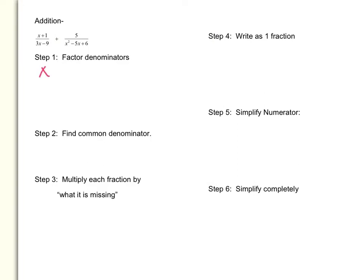In this example, there is nothing to factor out of our numerators, so they stay the same. Now, three x minus nine — I can factor a three out, so that's three times x minus three. Now let's look at the second fraction. The numerator is five, and in the denominator I need to find factors of six that add up to negative five. Negative two times negative three equals positive six, and negative two plus negative three equals negative five. So my factors are x minus three times x minus two.